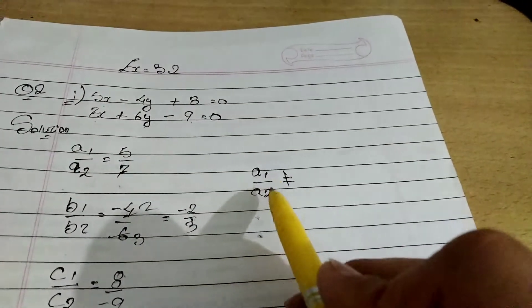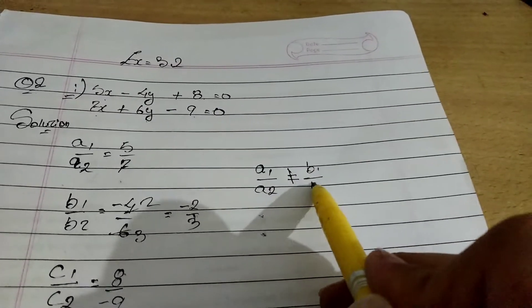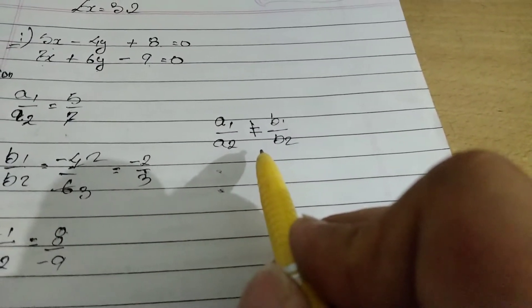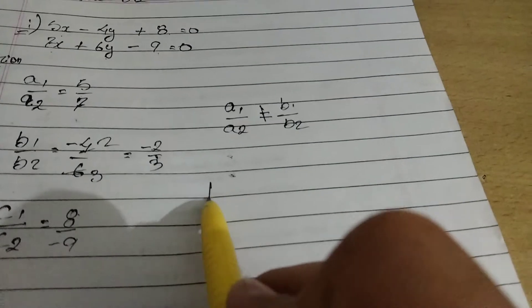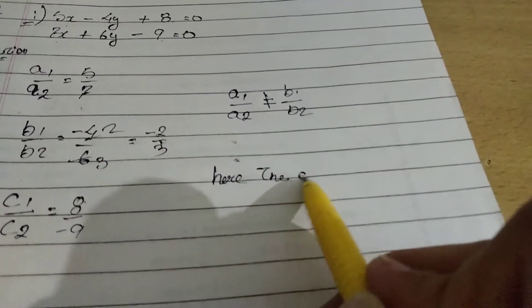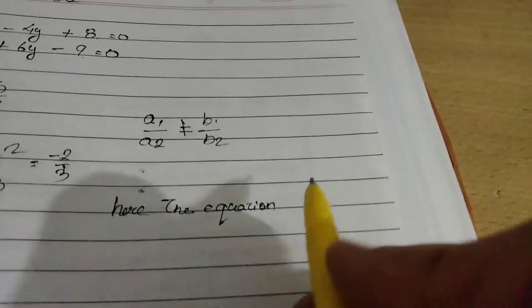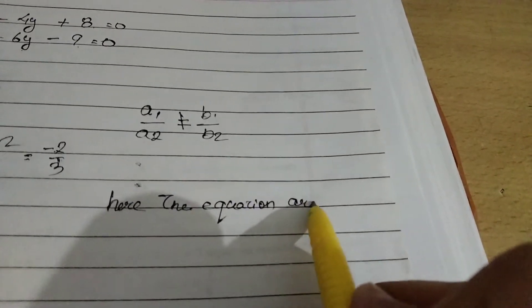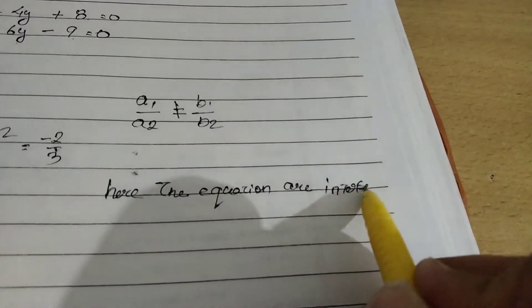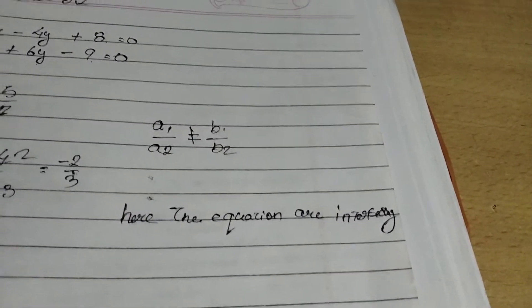In short, it will be A1 by A2 is not same as B1 by B2. This means that it is intersect. So here the equations are intersecting. We are done with this.